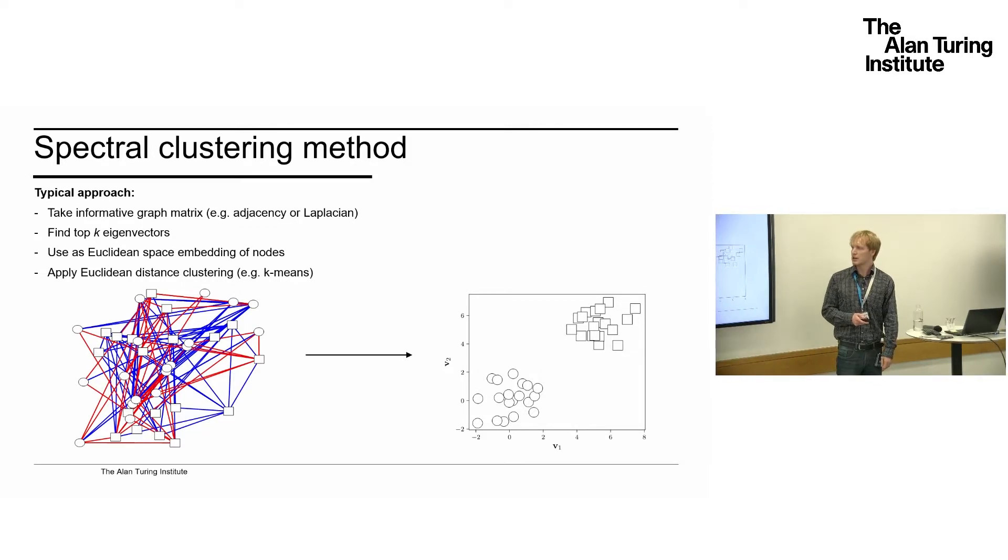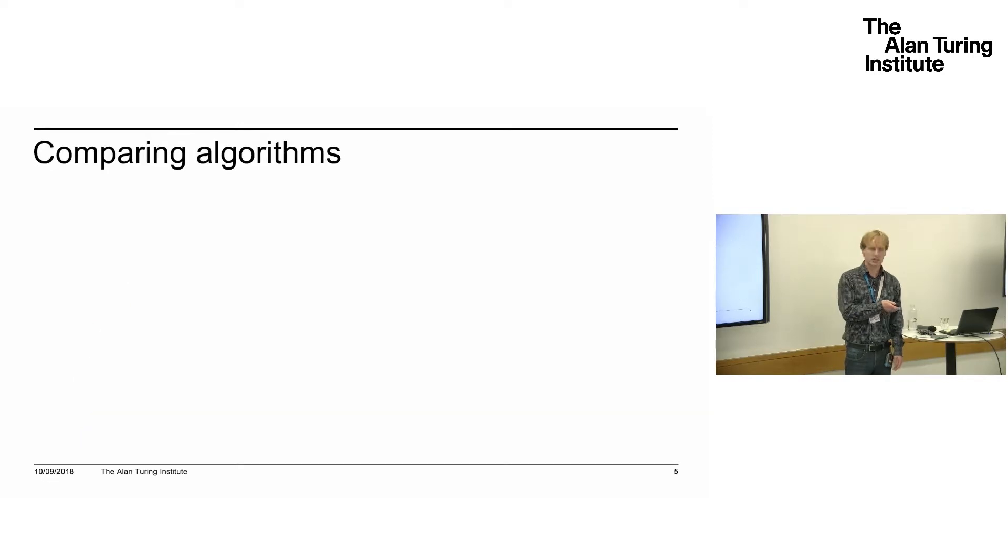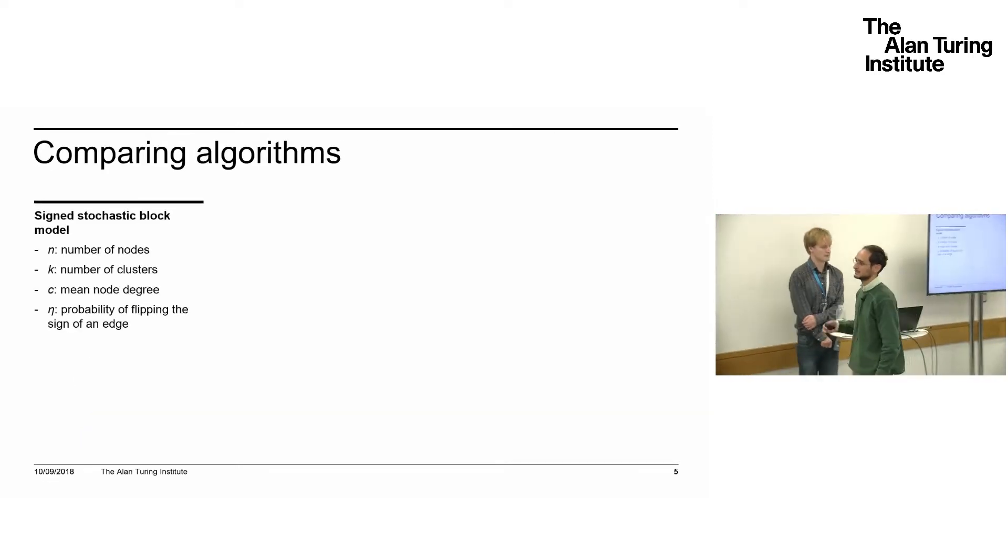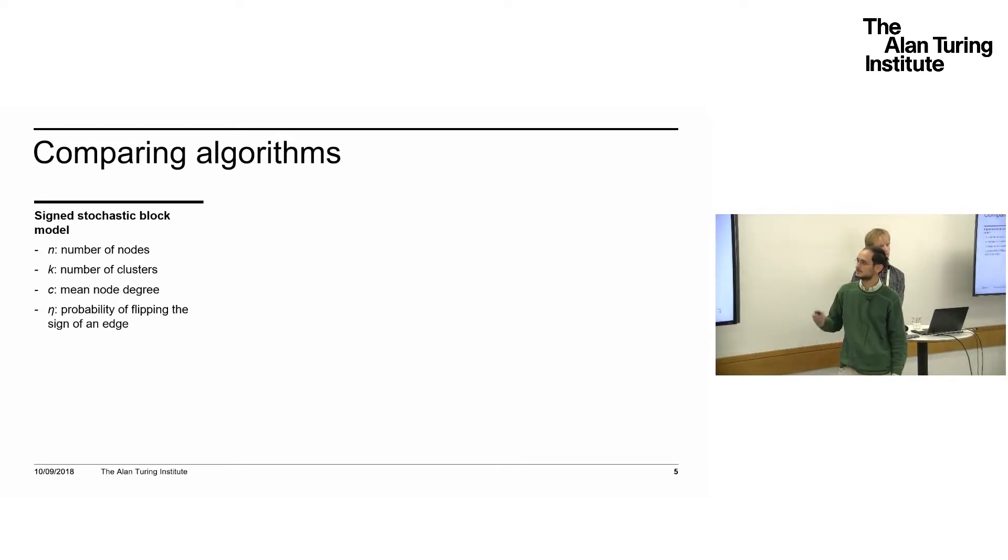That's how all the spectral algorithms we'll talk about work. The only real differences are what matrix you take at the start, and there are a couple of other things we'll discuss later. Peter was describing this synthetic model with planted communities, called the signed stochastic block model. You have N nodes, K colors or clusters, and C, the mean degree—the mean number of connections each node has. Eta is the probability of having a negative edge within a group or a positive edge between groups—it's the noise, the dominating noise.